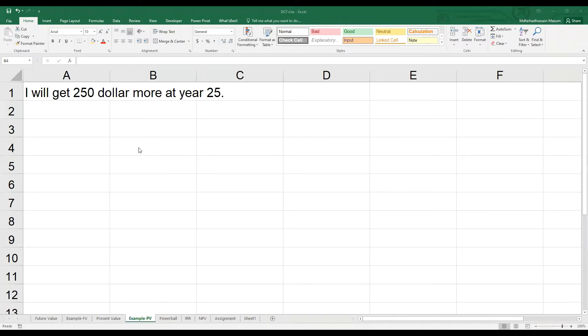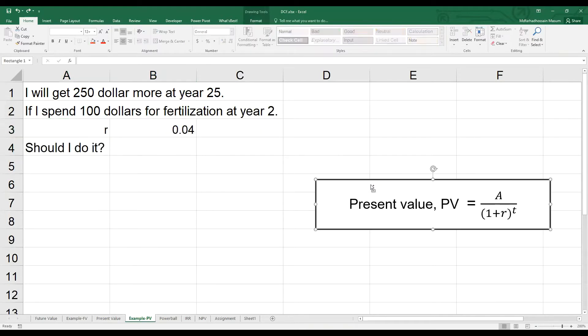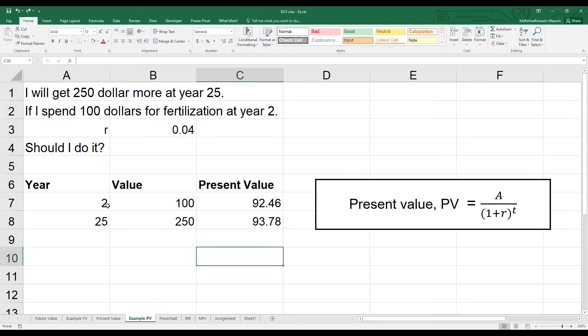Example 2. Suppose you will get $250 more at year 25 if I spend $100 for fertilization at year 2. Interest rate is 4%. Should I do it? First, I need to convert everything to present value so that I compare apples and apples. And yeah, it seems that I should do it. As long as it is greater than $92.46, sure.